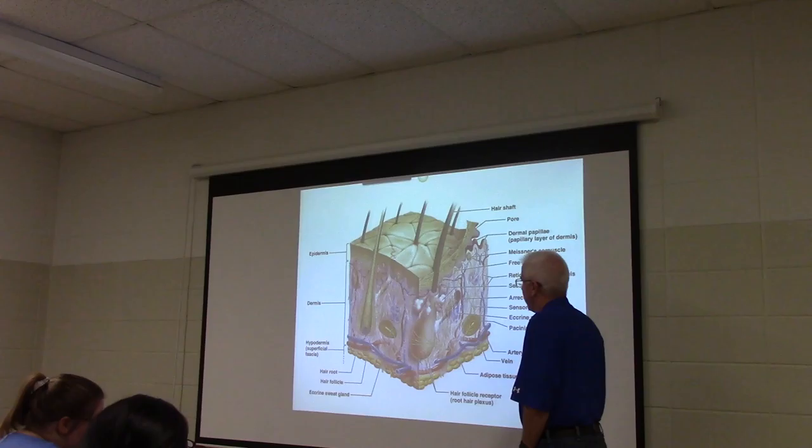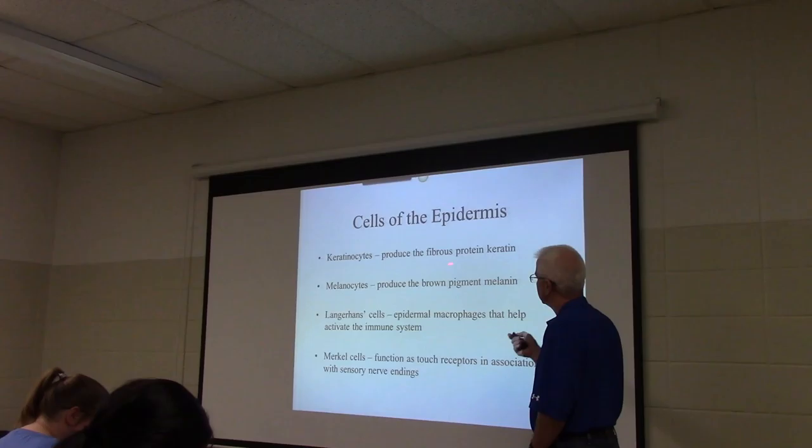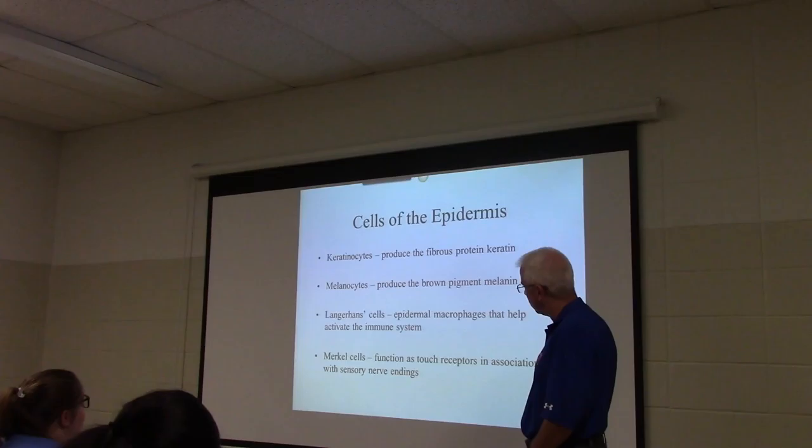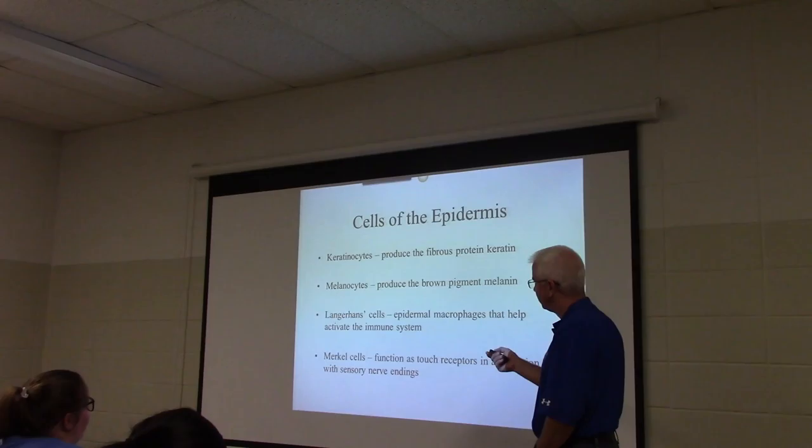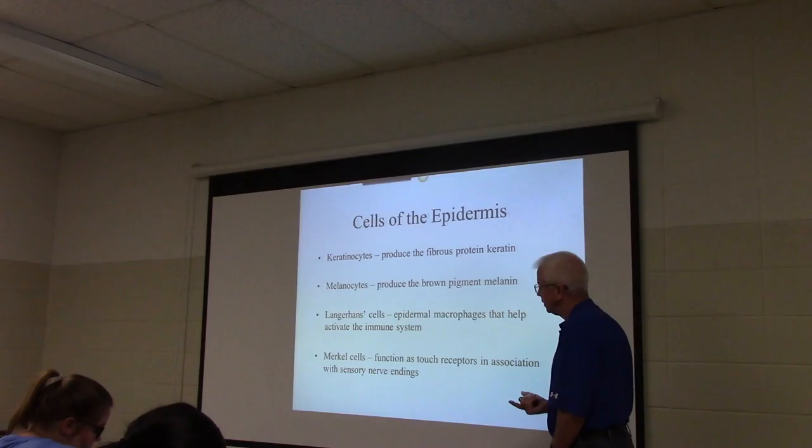Let's do epidermis first. Epidermis is made up of cells that contain keratin. At least 80% of all the cells are called keratinocytes because they're keratin-containing cells. There are some other cell types here. One of those are the melanocytes, and melanocytes along with keratin and hemoglobin determine skin color.